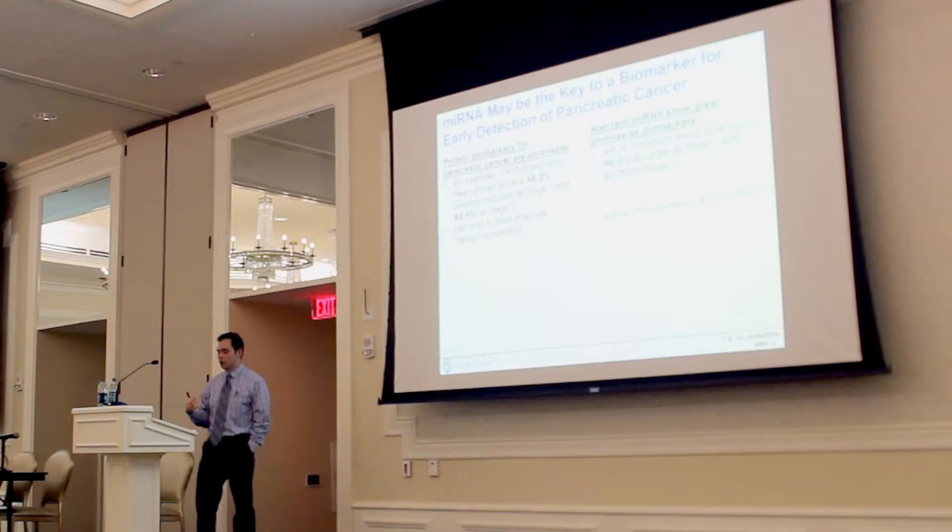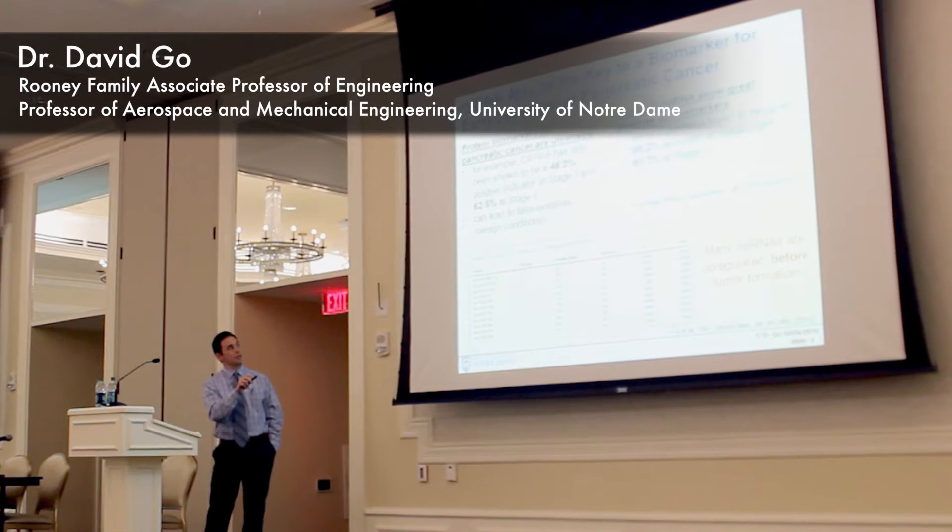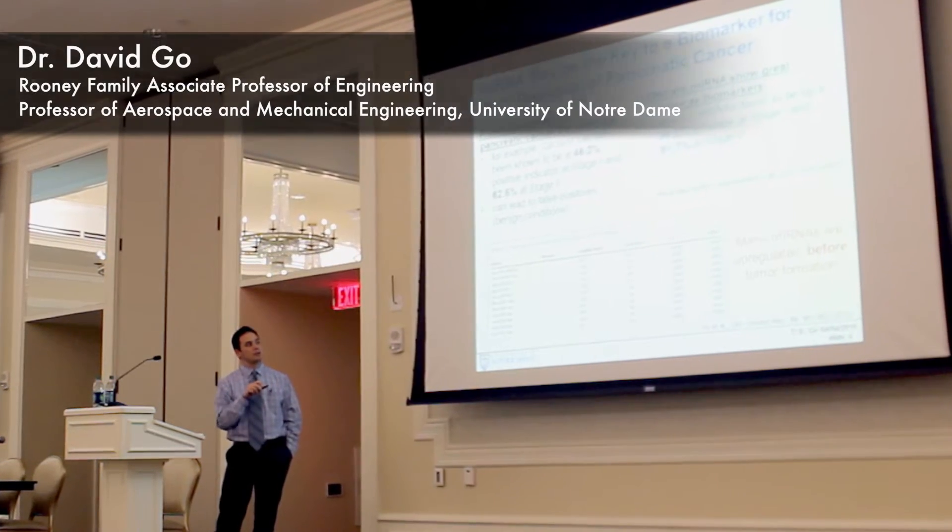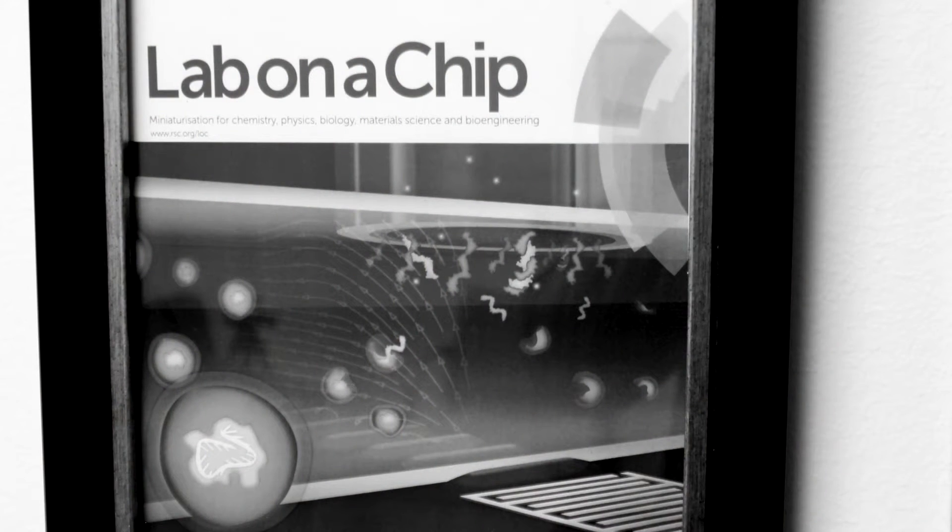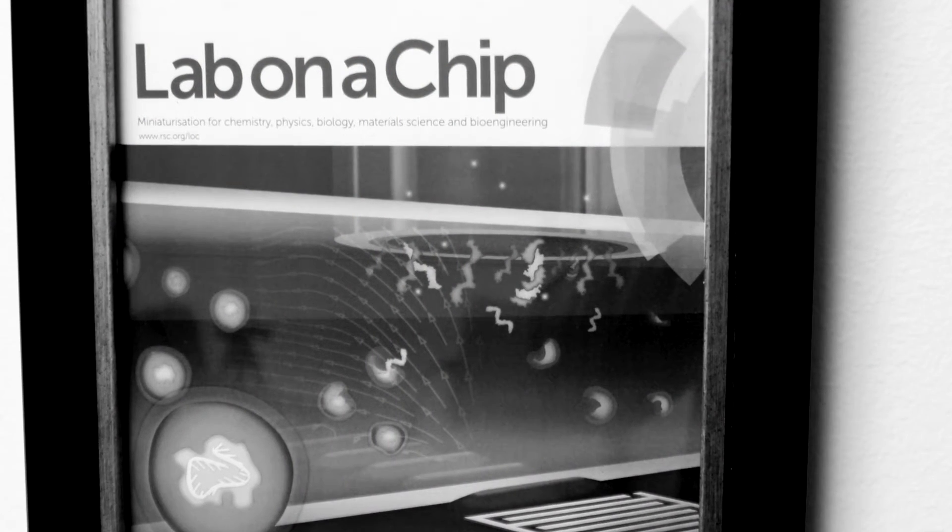David uses what's called a microfluidic platform, essentially a tiny lab on a chip, to detect exosomes that contain these micro RNAs. Essentially David's device captures the exosomes, blows them open, and detects those specific micro RNAs.